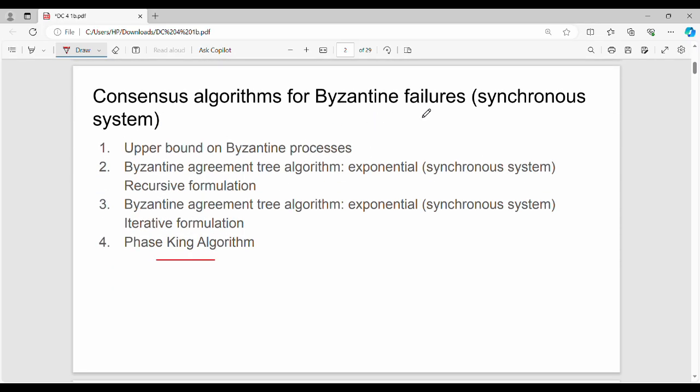Let's talk about Byzantine failures in Synchronous System. So, upper bound on Byzantine process, Byzantine problem statement and solving all conditions. Then, Byzantine algorithm using recursion, Byzantine algorithm using iteration. Then, last phase-king algorithm. So, Unit 4 covers all these sub-topics.